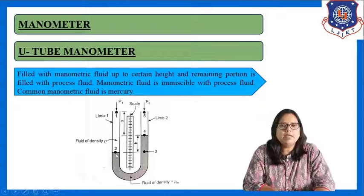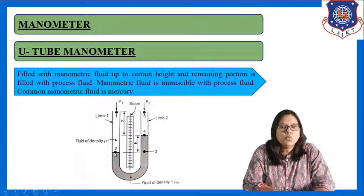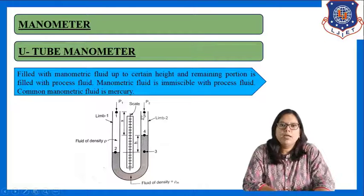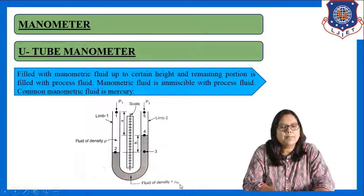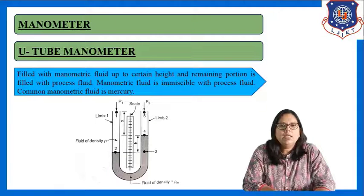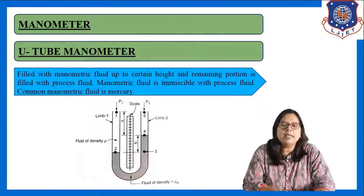See here in the figure — the notations are given. Point number 1 is where the pressure is P1. Point number 2, and at the same horizontal level, point number 3. Where the manometric fluid ends is point number 4, and point number 5 is where the pressure is P2. Let us assume that the density of the process fluid is rho and the density of the manometric fluid is rho m. Now I have to derive the equation used to calculate pressure difference in case of U-tube manometer.